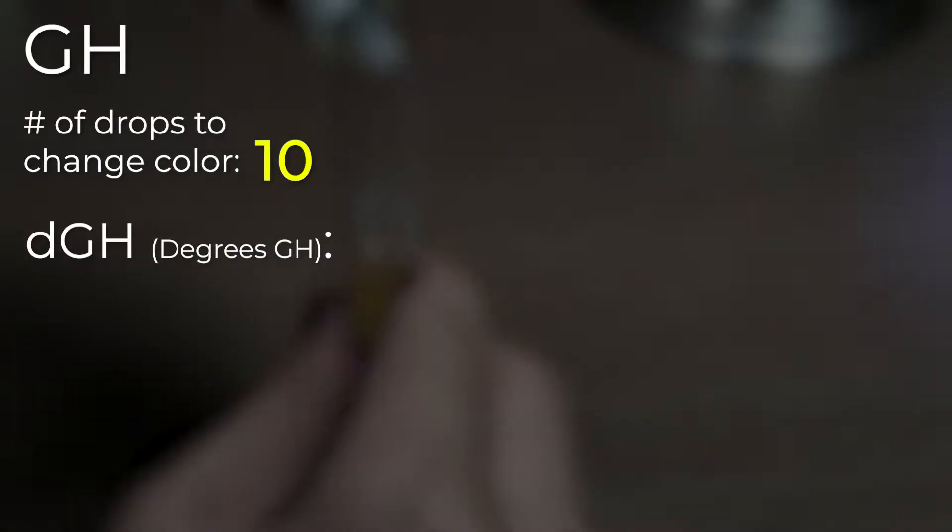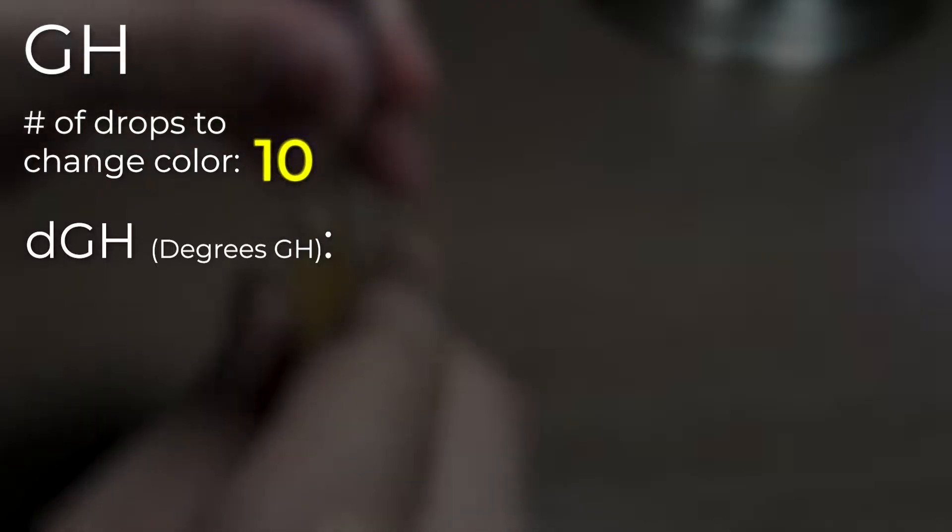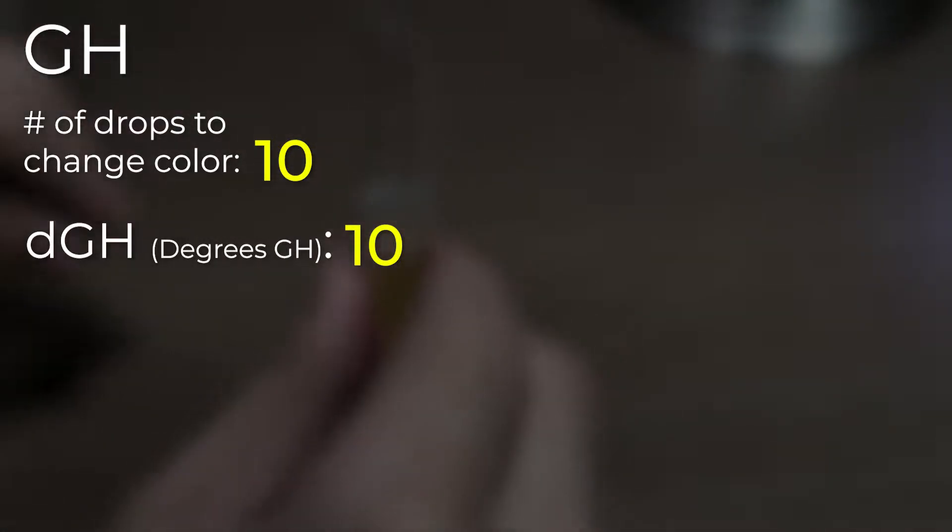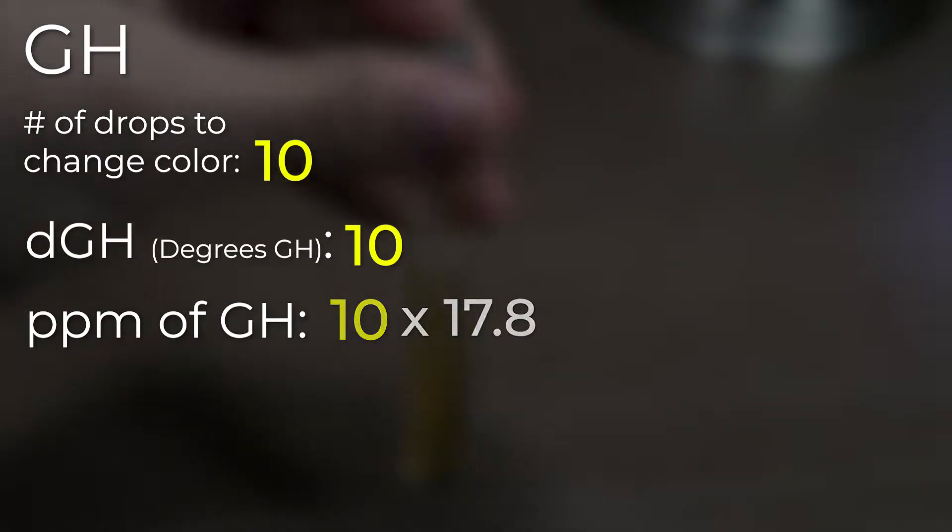Keep note of how many drops you add. This is important. Once we've got the number of drops, we can convert it to a GH value. The number of drops it took to change the color is your GH value, and more specifically, your DGH value. If you want to know the exact PPM, just multiply the number by 17.8.